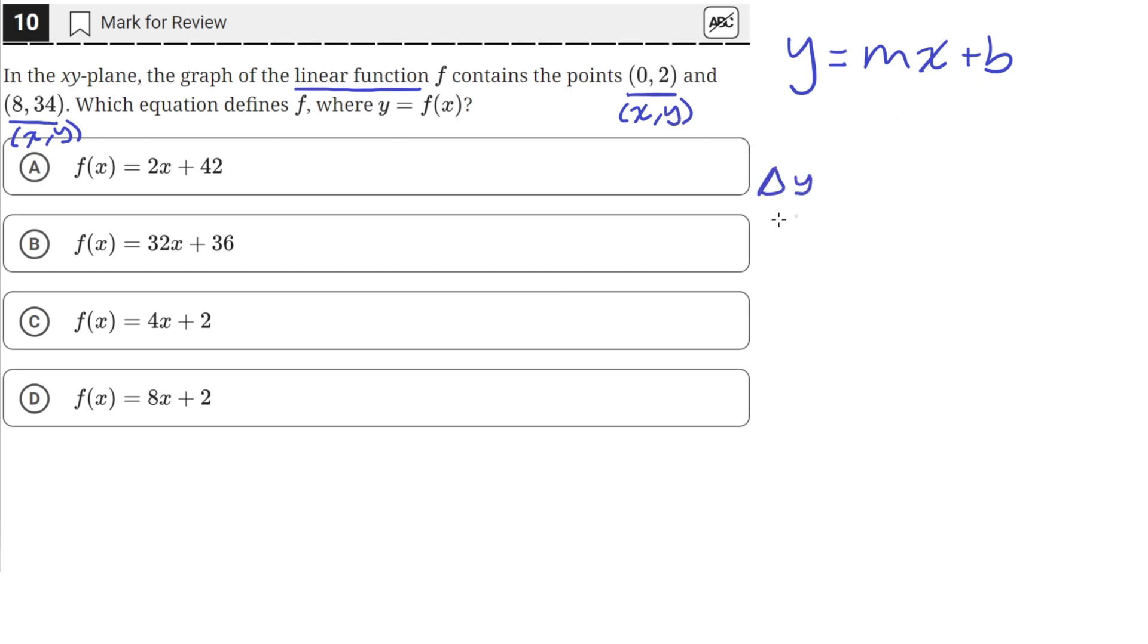The change in y divided by the change in x is going to be equal to... y goes from 2 to 34, so 34 minus 2 will give us the change in y. And x goes from 0 to 8, so the change in x will be 8 minus 0. This simplifies to 32 over 8, which is equal to 4. So the slope is equal to 4.